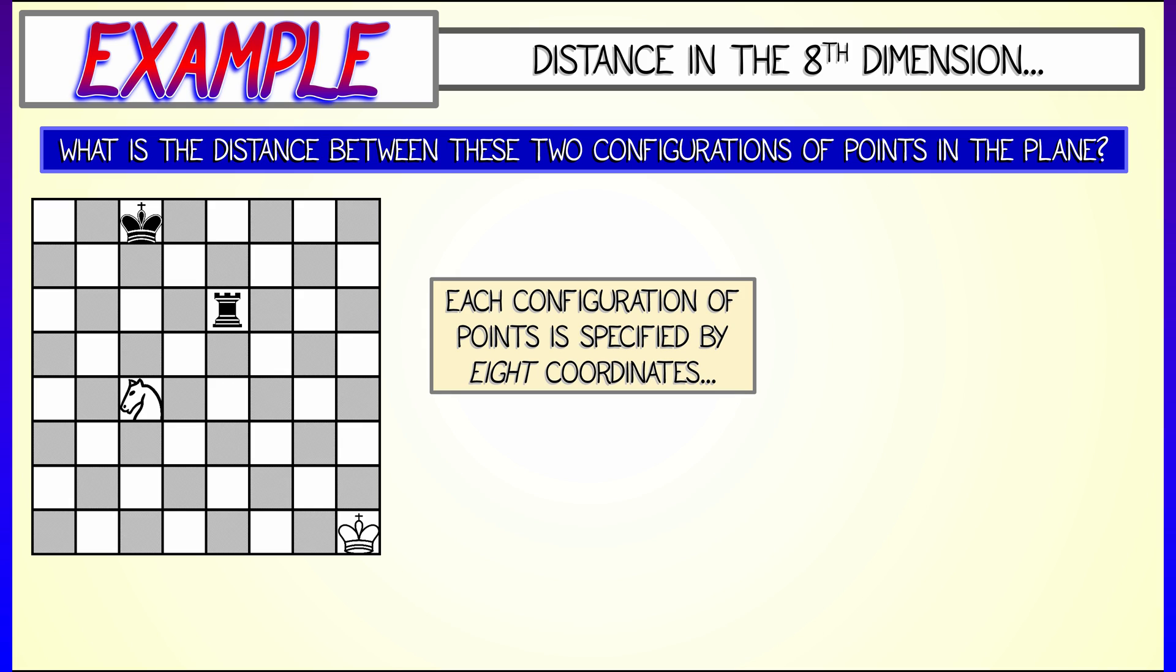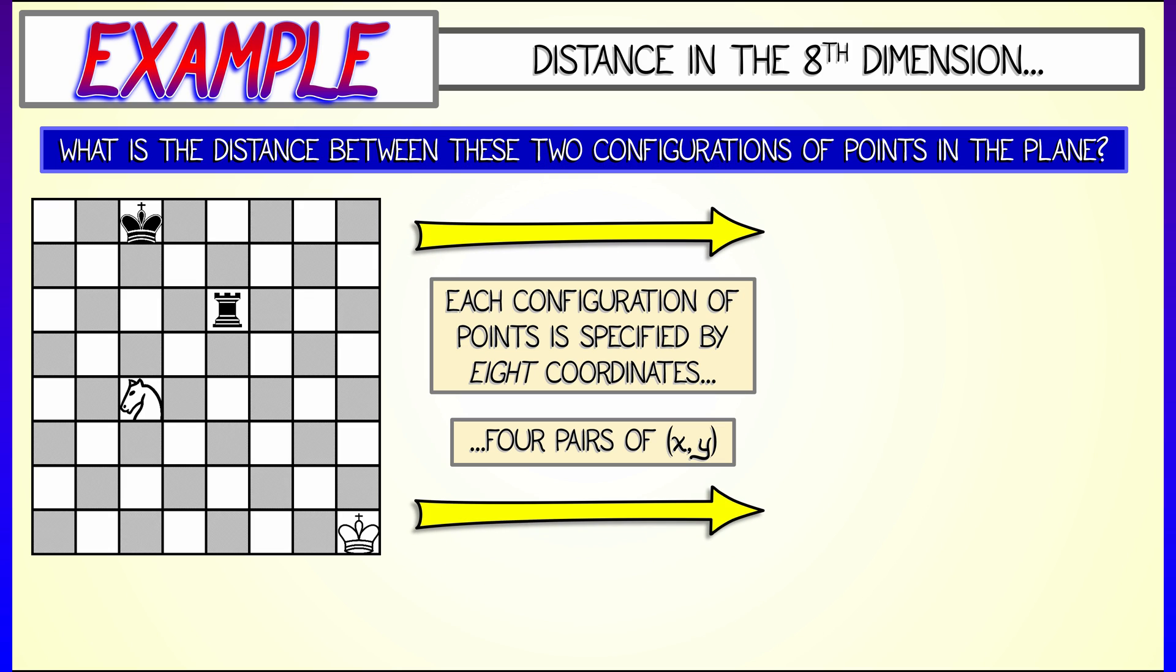Since each object is specified by two coordinates, an x and a y coordinate, the net configuration is specified by eight coordinates. That is, four pairs of x and y coordinates. So, this is a location, a point in an eight-dimensional configuration space.